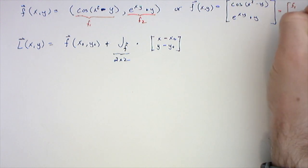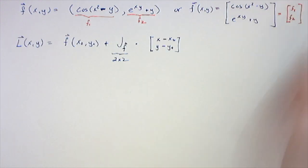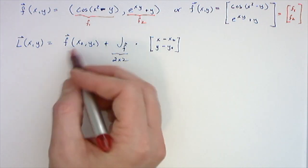Then I typically write it with this vector notation, so we've got the vector [f1, f2] where f1 and f2 are functions of x and y, and then the linearization is the vector...